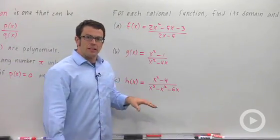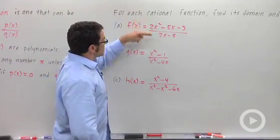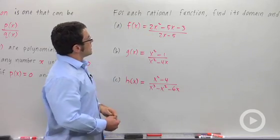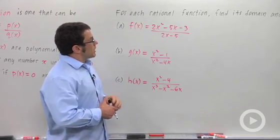Each of these three is a rational function, polynomial divided by polynomial, so p of x over q of x. Now, find the domain and zeros.